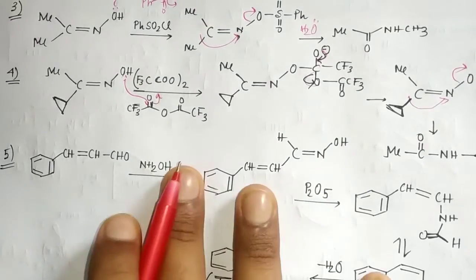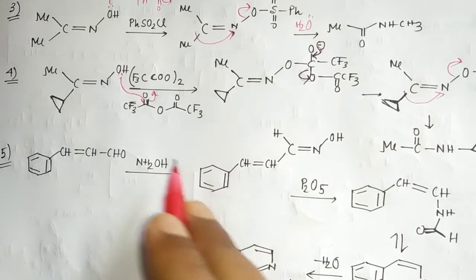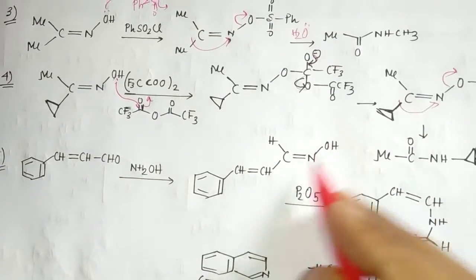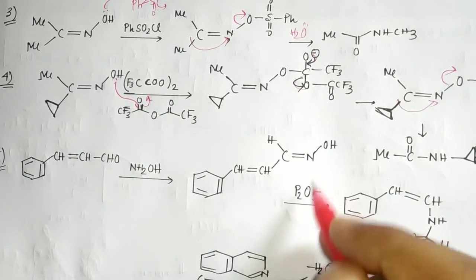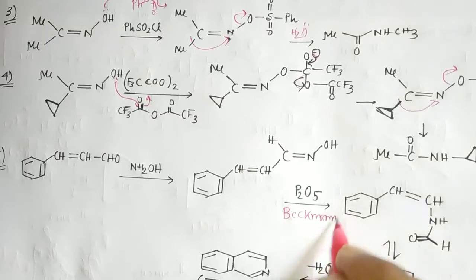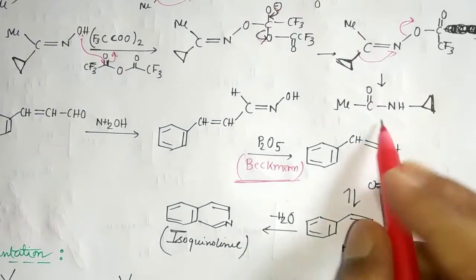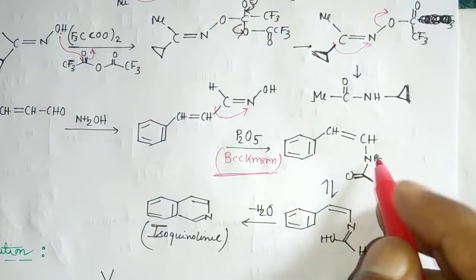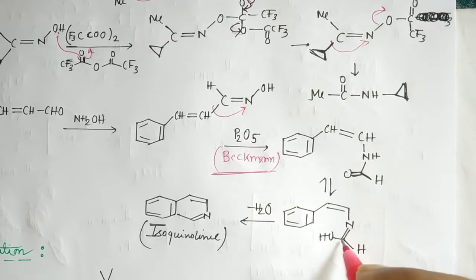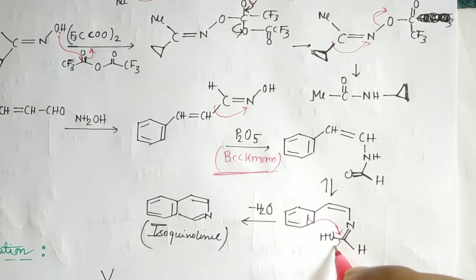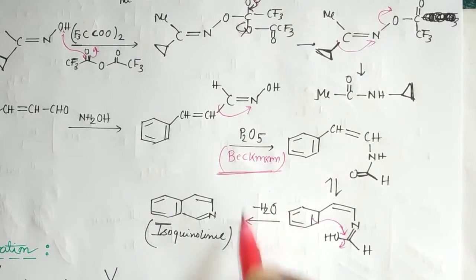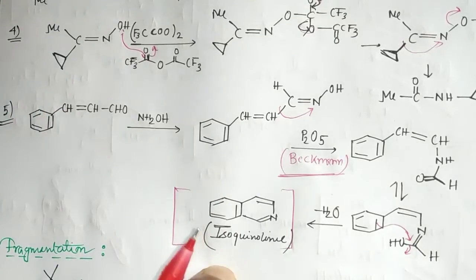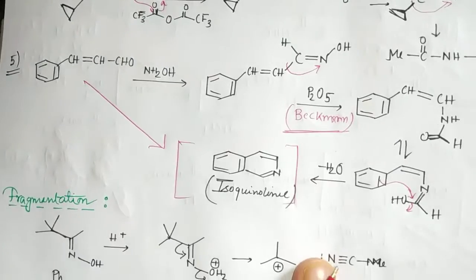One more example: using NH₂OH, prepare the oxime, then use P₂O₅ for Beckmann rearrangement. The anti group migrates to nitrogen, giving an intermediate. After tautomerization, the OH bond attacks and water leaves, giving an isoquinoline derivative. This shows how Beckmann rearrangement can be used to cyclize and form heterocyclic products.